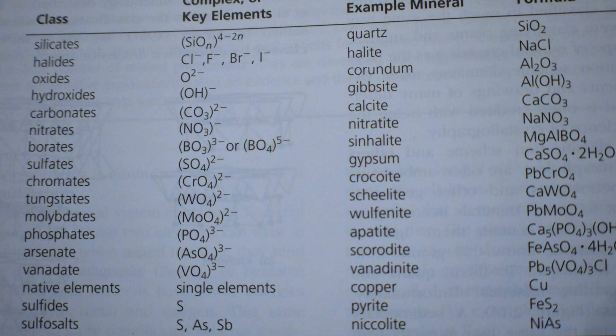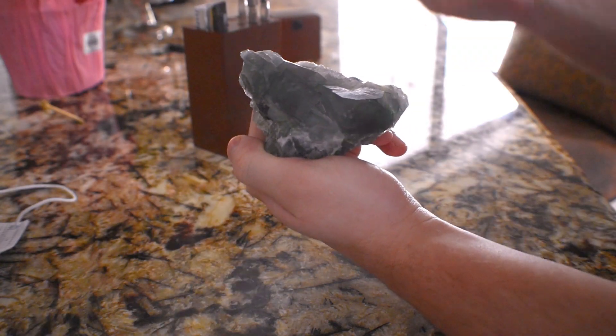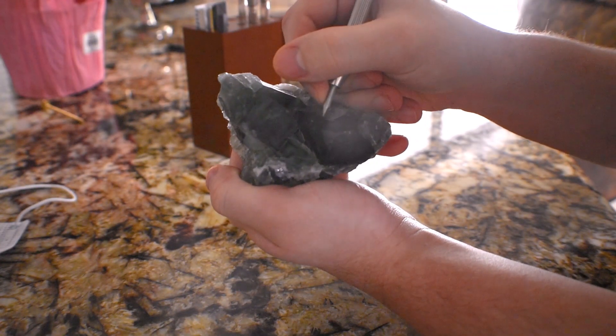In my last video, we discussed the mineral classification system, which was basically the classification system that us geologists use to classify minerals based on their chemistry and their crystalline or atomic structures. I originally wanted to go into physical and chemical properties of minerals, but I decided I'd squeeze in this subject beforehand, which is mineral crystallization.